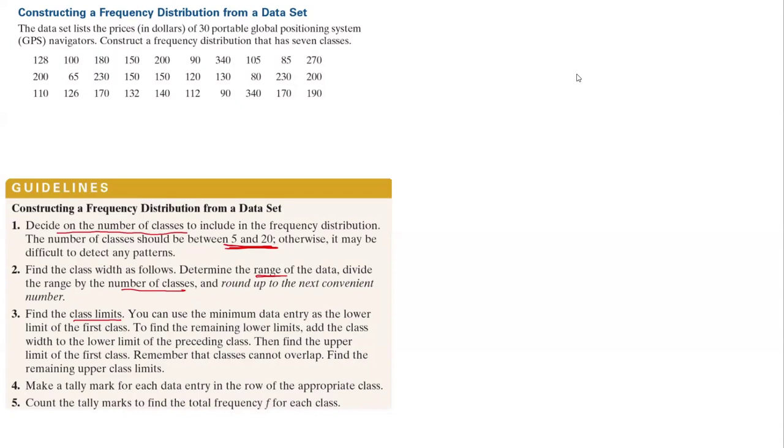You can use the minimum data entry as the lower limit of the first class. To find the remaining lower classes, add the class width to the lower limit of the preceding class. Then find the upper limit of the first class. You can use a tally mark for each frequency and count the tally marks to find the total frequency f for each class.